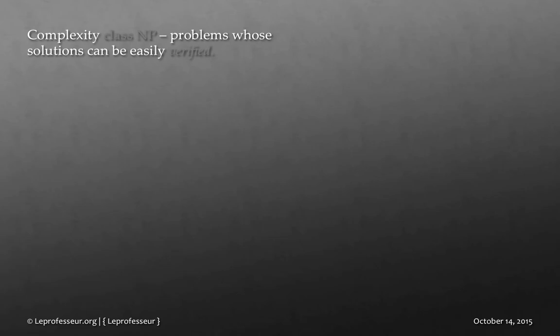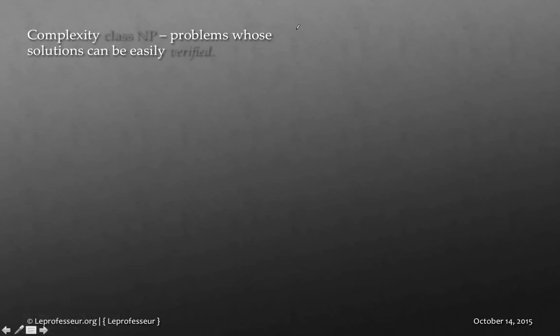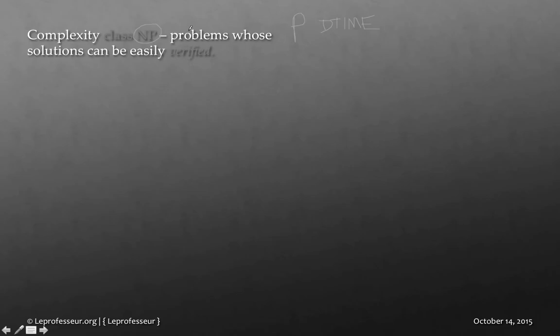For the complexity class P, the problems which fall under P are problems we can solve in deterministic time — meaning we are sure we will be able to solve those problems in real time. Now there is another complexity class, NP. For NP class of problems, we can verify whether a solution is correct or not, but we cannot find the actual solution that easily, or in other words we can't find it in deterministic time.